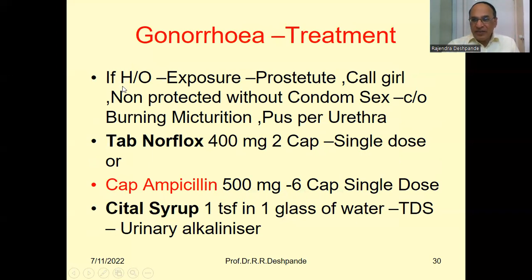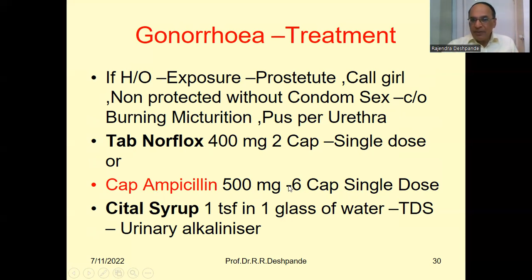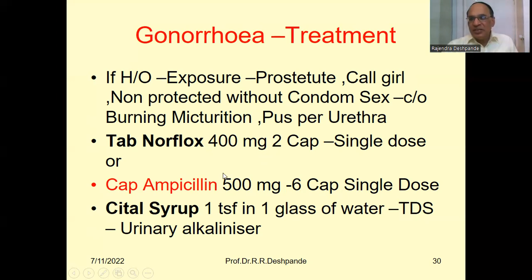If there is a history of exposure and the person has had unprotected sex without a condom, then within the incubation period of about three days he will start getting burning and pus per urethra. The doctor can prescribe tablet Norflox — Norfloxacin 400 mg, two capsules as a single dose. Or capsule Ampicillin 500 mg, six capsules at a time as a single dose. In addition, Cital syrup is available — one teaspoon in one glass of water, three times a day. This is a urinary alkalinizer. The acidity will come down and burning will automatically reduce because of Cital, covering the Neisseria gonorrhoeae bacteria with the antibiotic.